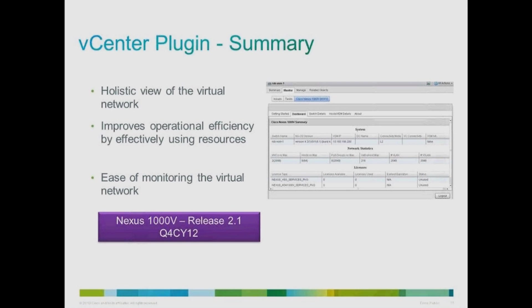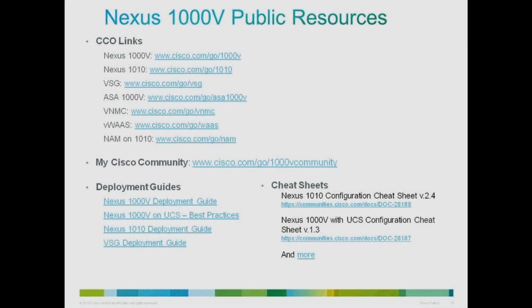In summary, the vCenter plugin provides a holistic view of the network to help you better manage license utilization and monitor your network topology. It greatly improves operational efficiency and provides a means of effectively utilizing your network resources. This plugin simplifies your data center network by providing a tool to easily monitor the virtual network. This plugin will be available in Nexus 1000v release 2.1, ready in Q4CY12. To learn more about these new features, please see the Cisco data center blogs. Thank you for watching.